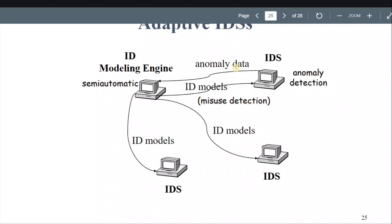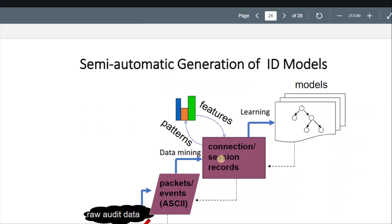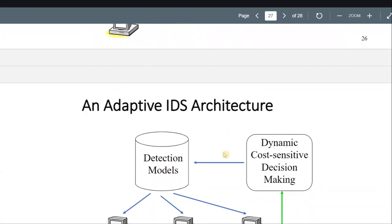Misuse detection and anomaly data — the misuse detection creates patterns, and the anomaly detection creates features. These features are sent to the semi-automatic generator which then creates models. So: patterns turn into features, which turn into models.